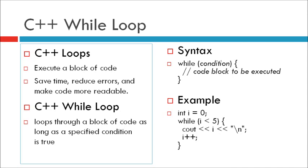C++ While Loop. The while loop loops through a block of code as long as a specified condition is true. Syntax: while (condition) { code block to be executed }.